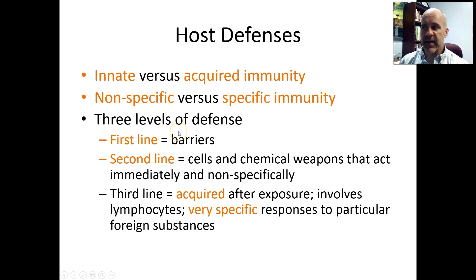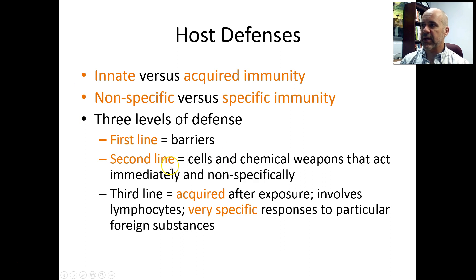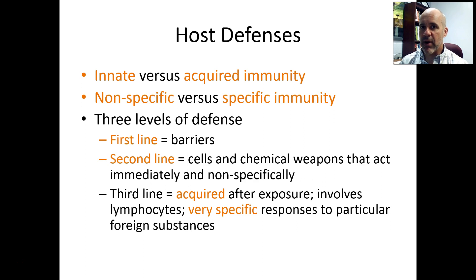We're also going to talk about three levels of defense. Your first line of defense consists of barriers — things like skin and mucous membranes — that prevent microbes from getting into the body in the first place. Microorganisms often get past the first line and meet the second line of defense: cells and chemical weapons, mostly proteins, that immediately attack bacteria, fungi, viruses, parasitic worms, and protozoans without any prior exposure.